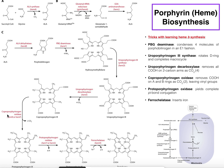The enzyme coproporphyrinogen oxidase does something fairly similar, except it targets both remaining carboxyl groups on the A and B rings. These two carboxyl groups are again lost as carbon dioxide, but what remains are what we call vinyl groups — these alkene groups sticking off of the ring. It only does that on the A and B rings, and that gives us protoporphyrinogen IX.